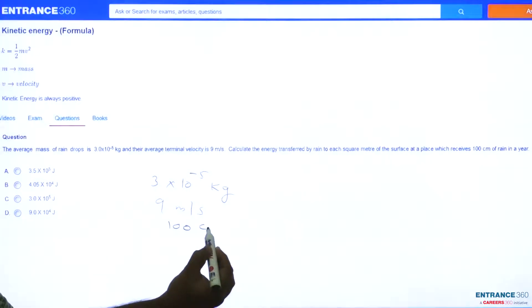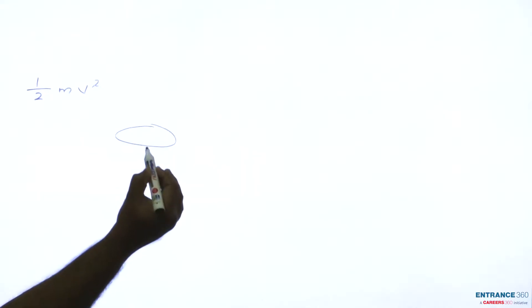The place receives 100 centimeters of rain in a year. For calculating energy transferred from the given data, using the formula energy equals half mv², we can calculate the kinetic energy for 1 meter square area.